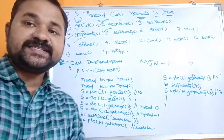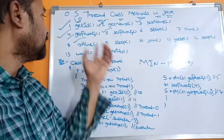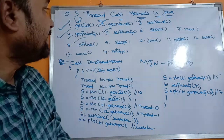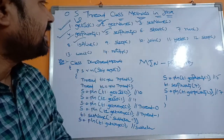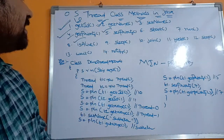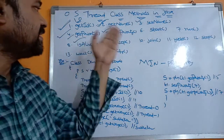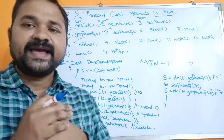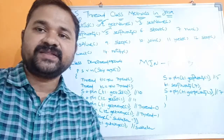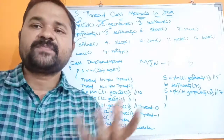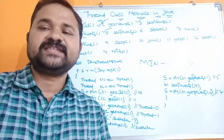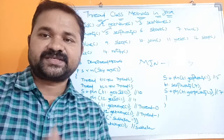So this is about the getId method, getName method, setName method, getPriority method, and setPriority method. In the upcoming videos we will see the remaining methods.